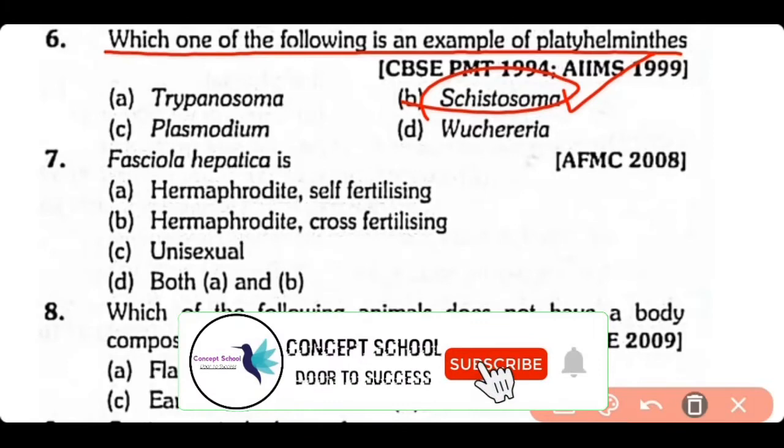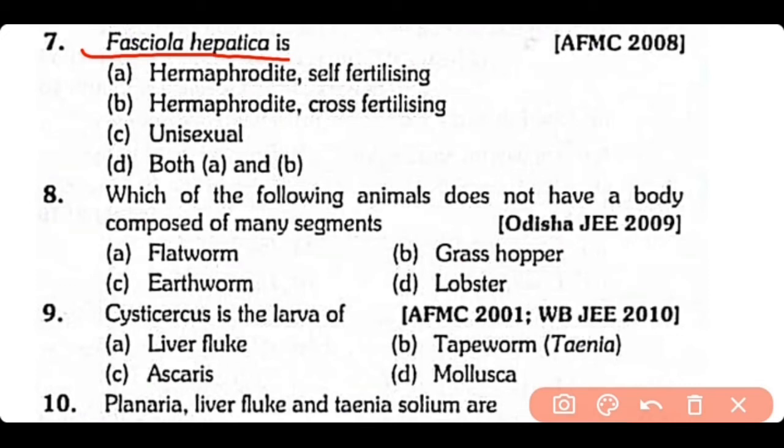Question no.7. Fasciola hepatica is: hermaphrodite and self-fertilizing, hermaphrodite and shows cross-fertilization, unisexual, or both A and B? The correct answer is option D. Fasciola hepatica is a hermaphrodite and the most common method is cross-fertilization, but self-fertilization is also present.